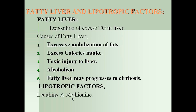Fatty liver and lipotropic factors: fatty liver refers to the accumulation of excess TAGs in the liver. Causes include excessive mobilization of fatty acids, excess caloric intake, toxic injury to the liver, and alcoholism. Fatty liver may progress to cirrhosis. Lipotropic factors are those which prevent fatty liver, such as lecithins, choline, and methionine.